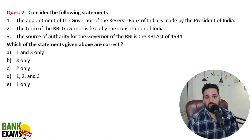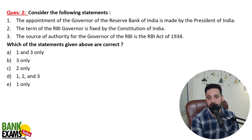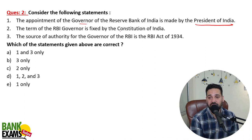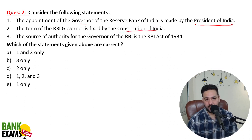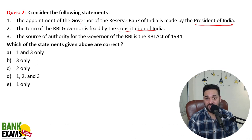Consider the following statements and tell me which are correct. Statement one: Appointment of Governor of RBI is made by the President of India. Statement two: The term of RBI Governor is fixed by the Constitution of India. Statement three: The source of authority for the Governor of RBI is the RBI Act 1934.